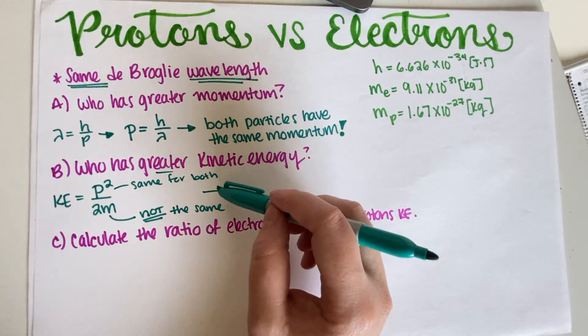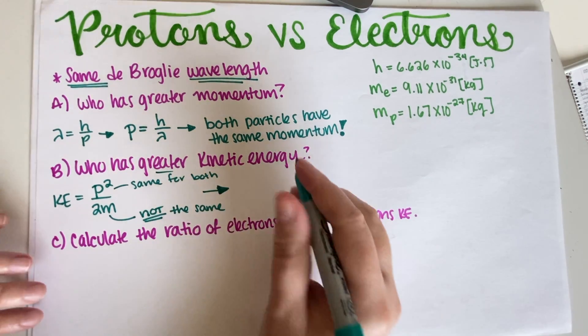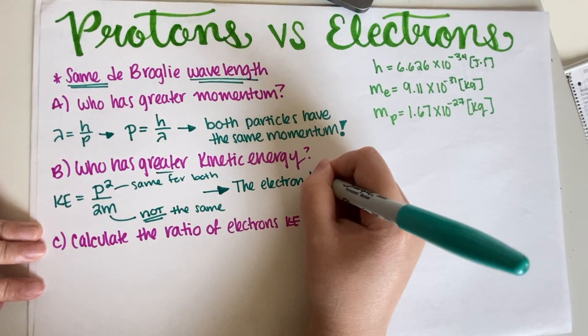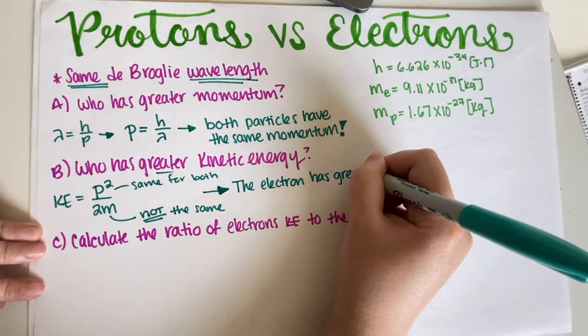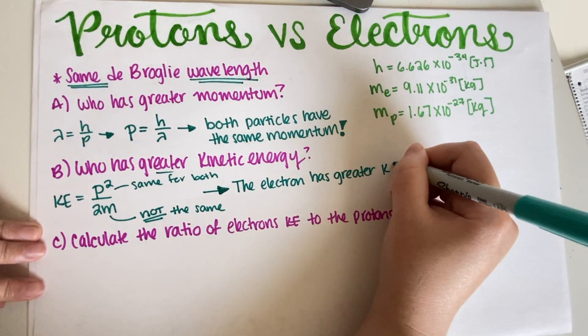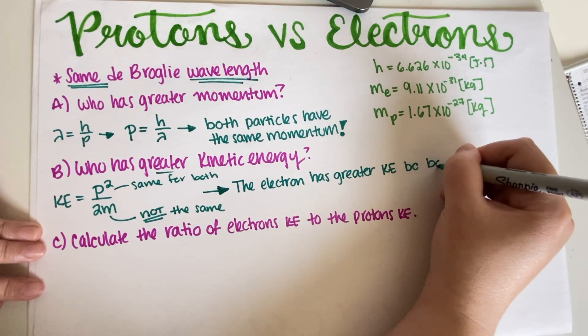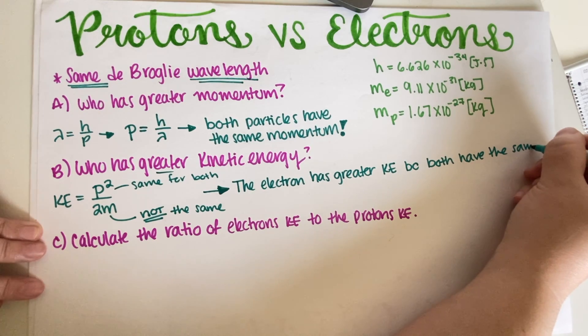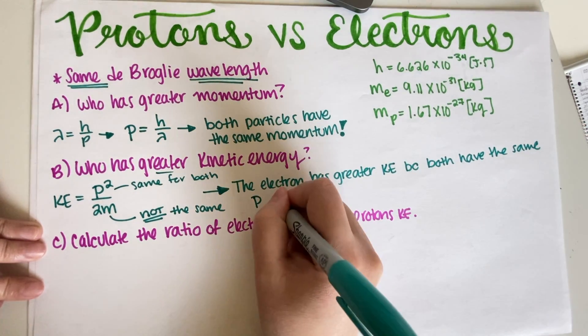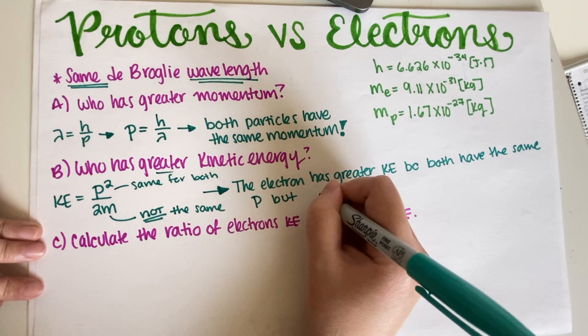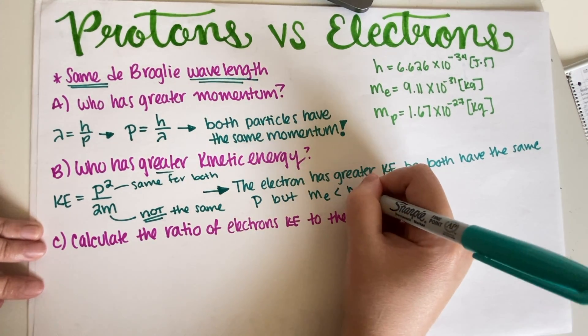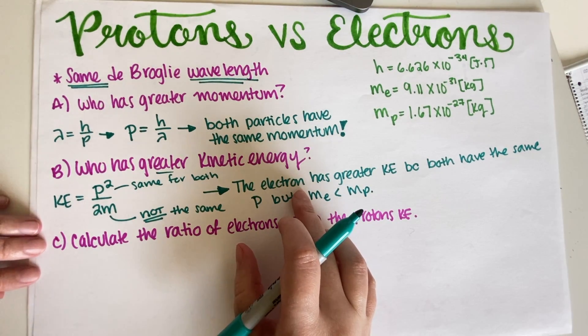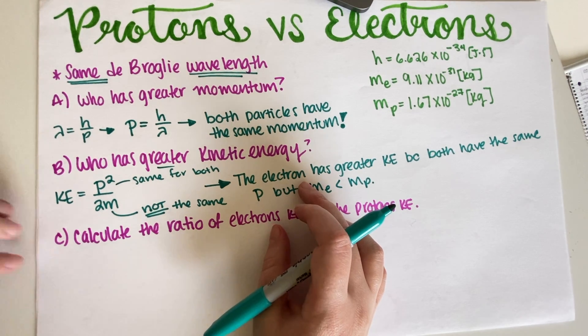Now who's going to have the greater kinetic energy? Well, the greater kinetic energy is going to be for whomever has the lesser mass. So the electron has a greater kinetic energy because both have the same momentum but mass of the electron is smaller than the mass of the proton. So final answer is that the electron has a greater kinetic energy.